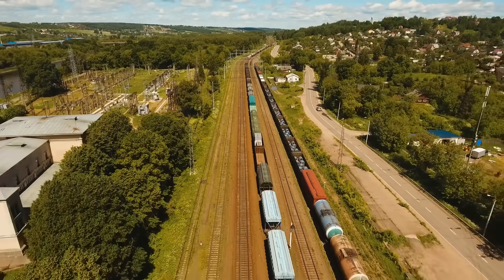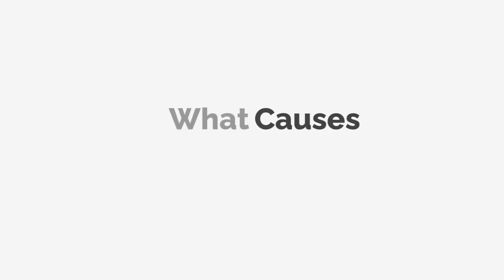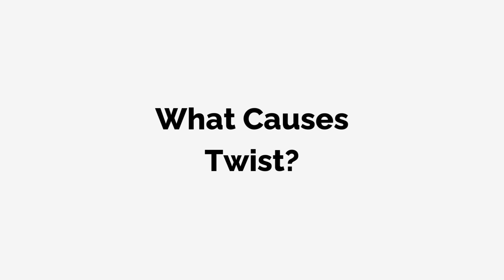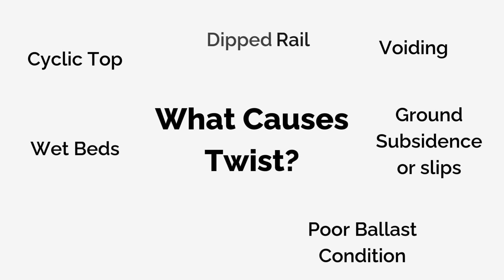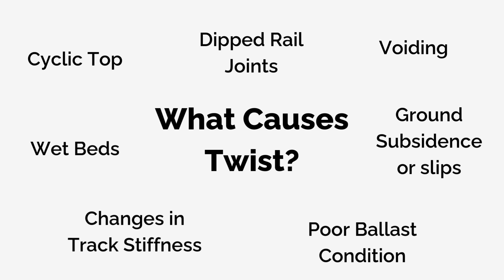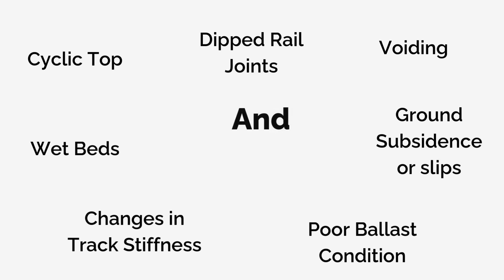What causes a twist? The answer is anything that causes sudden or localized dips or changes in horizontal alignment. It could be cyclic top, wet beds, ground subsidence or slips, voiding or poor ballast condition, rail joints that dip, or changes in track stiffness — such as going from ballasted track to a fixed track of a bridge. The list is extensive and I'm sure being added to all the time.